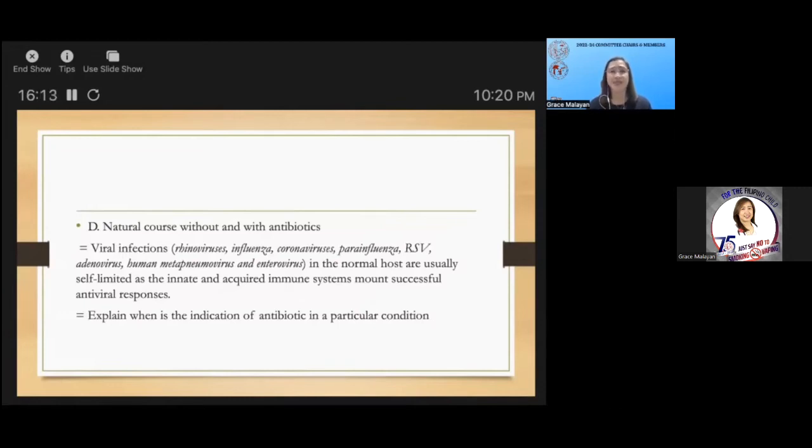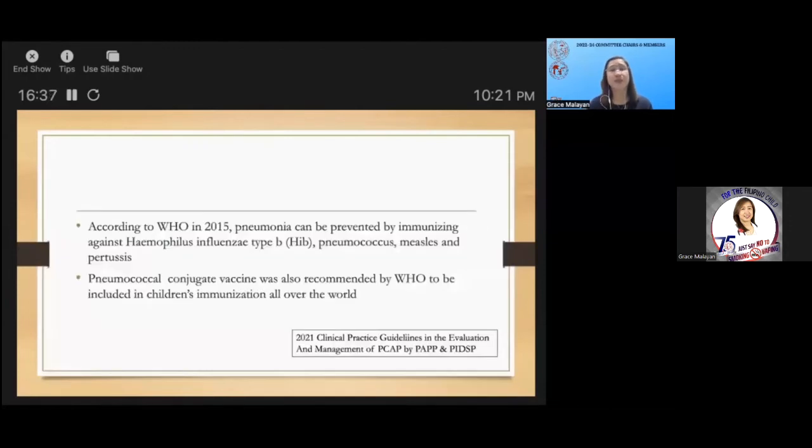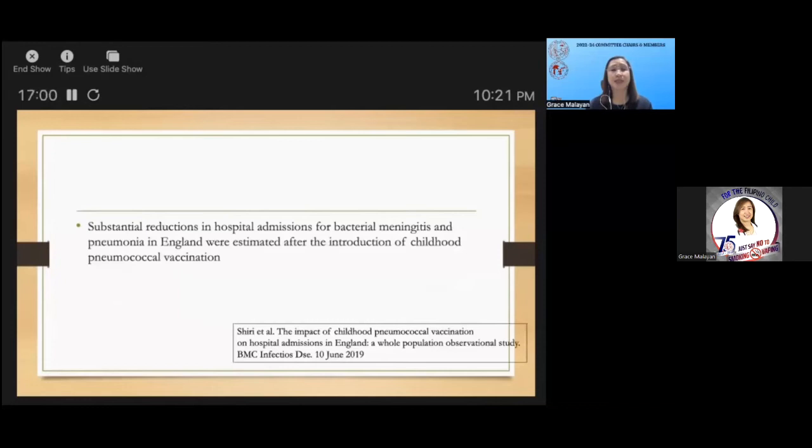Vaccines ultimately represent the best opportunity to reduce the morbidity and mortality associated with pediatric respiratory tract infections. We would like to thank PHP for the childhood immunization schedule for 2022. According to WHO in 2015, pneumonia can be prevented by immunizing against Haemophilus influenzae type B, pneumococcus, measles, and pertussis. Pneumococcal conjugate vaccine was recommended by WHO to be included in children's immunization all over the world. Substantial reductions in hospital admissions for bacterial meningitis and pneumonia in England were estimated after the introduction of childhood pneumococcal vaccination.